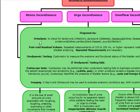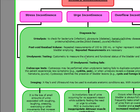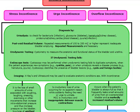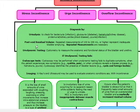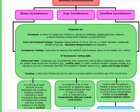Another thing we're going to do is post-void residual volume, and we have to do repeated measurements on these patients. If we have repeated measurements of over 100 to 200 or higher, it's going to indicate inadequate bladder emptying. That's going to give us another type of incontinence which we'll go over in a moment.